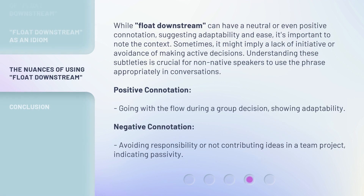While float downstream can have a neutral or even positive connotation, suggesting adaptability and ease, it's important to note the context. Sometimes it might imply a lack of initiative or avoidance of making active decisions. Understanding these subtleties is crucial for non-native speakers to use the phrase appropriately. Positive connotation: going with the flow during a group decision, showing adaptability. Negative connotation: avoiding responsibility or not contributing ideas in a team project, indicating passivity.